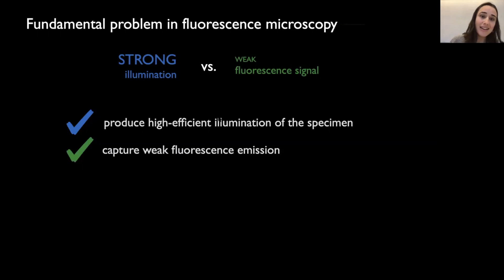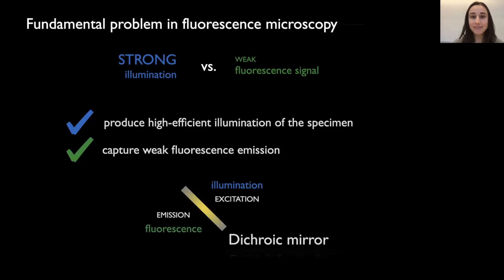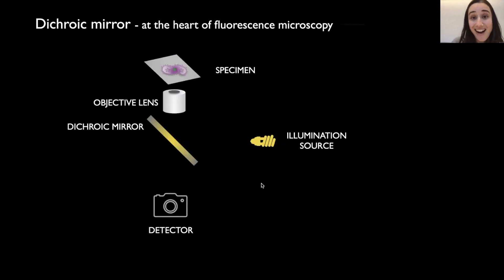And so how do we solve this problem? Well, we want to produce a high efficient illumination of the specimen as good as possible to try to increase the chances of this process to occur. And at the same time, capture the weak fluorescence emission coming from our probes. And we can only do that if we indeed separate the two light paths, the illumination or excitation light path from the fluorescence, which is the emission light path. And that is done with a dichroic mirror. So the dichroic mirror is really important because it's the one that separates its two light paths. And that is done because the dichroic mirror has several coatings, special optical coatings that will be reflecting some wavelengths and letting pass through other wavelengths. And this happens with the interference like destructive or constructive interference. So that's why the dichroic mirror is at the heart of fluorescence microscopy.